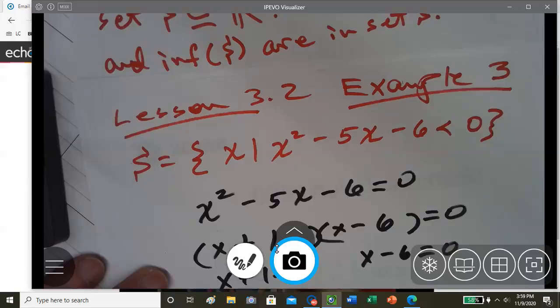And so we apply negative 1 to both sides, we get x equals negative 1. And 6 to both sides, we get x equals positive 6.